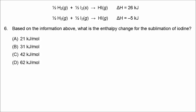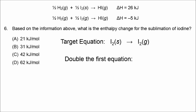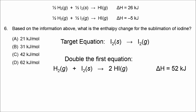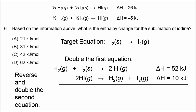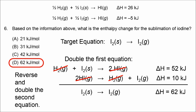Number 6 involves Hess's Law. The target equation is the sublimation of iodine — solid to gas. Our first equation has one half mol of solid iodine on the left; we want 1 mol, so we double it, making delta H 52 kilojoules. The second equation needs to be reversed and doubled to get 1 mol of iodine gas on the right, making delta H positive 10. Adding the equations and canceling hydrogen and hydrogen iodide, delta H is 52 plus 10, so the correct answer is D, 62 kilojoules per mole.